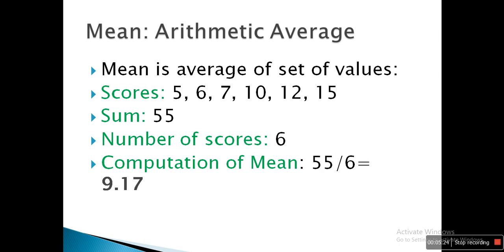Let's come to mean, also called the arithmetic average. Mean is the average of a set of values. We have all been dealing with averages since childhood — percentage, average score, average in cricket, and so on. In this example, the scores are 5, 6, 7, 10, 12, and 15. Their sum is 55 and the number of scores is 6, so the mean is 55 divided by 6, which gives 9.17.